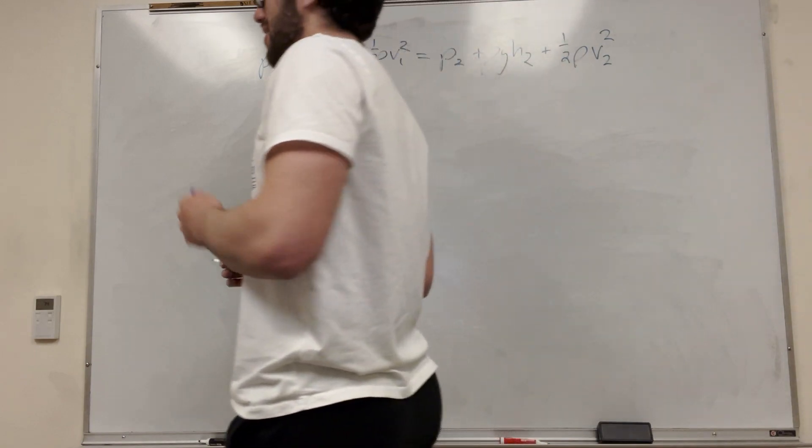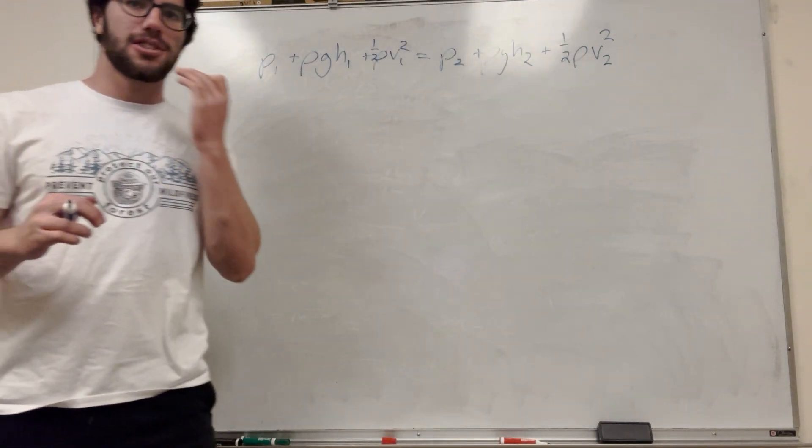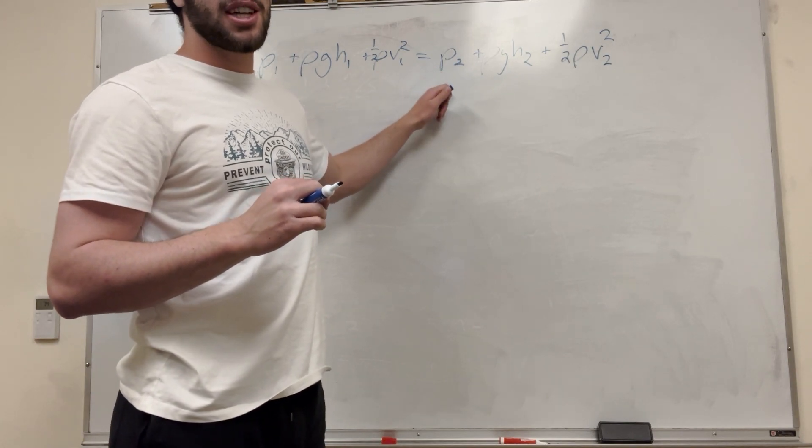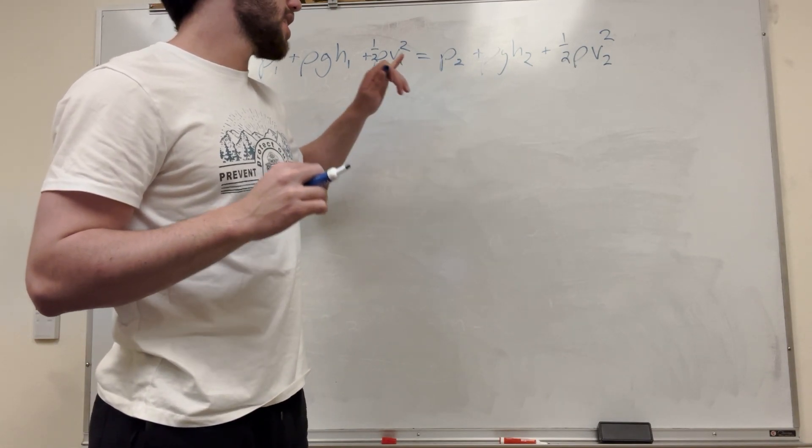What are we going to use out of this? What are we trying to find? We're trying to find pressure of 2, right? That's what we're trying to find, the gauge pressure of 2. That's going to be one thing we need. That's what we're solving for.